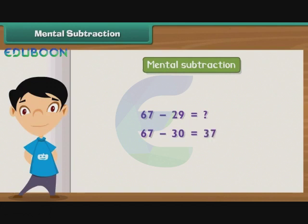The subtraction gives us 37. But we subtracted an additional 1, so we add 1 to the difference. Thus, the result of subtracting 29 from 67 is 38.